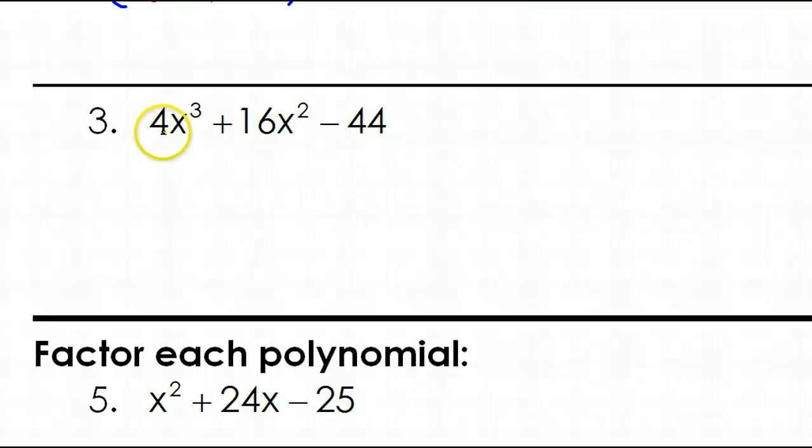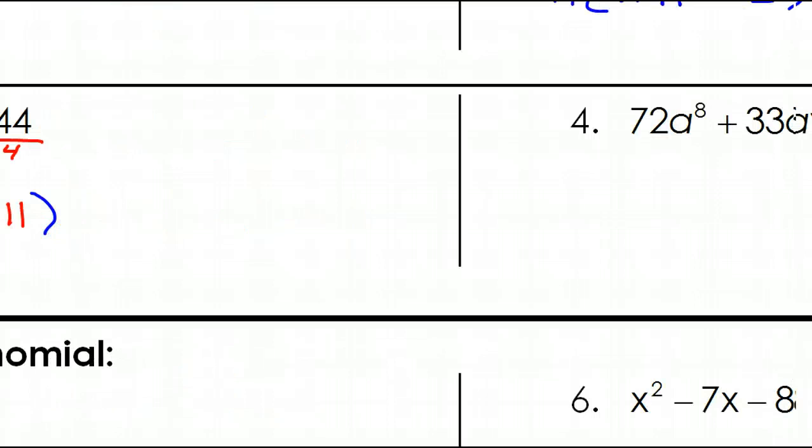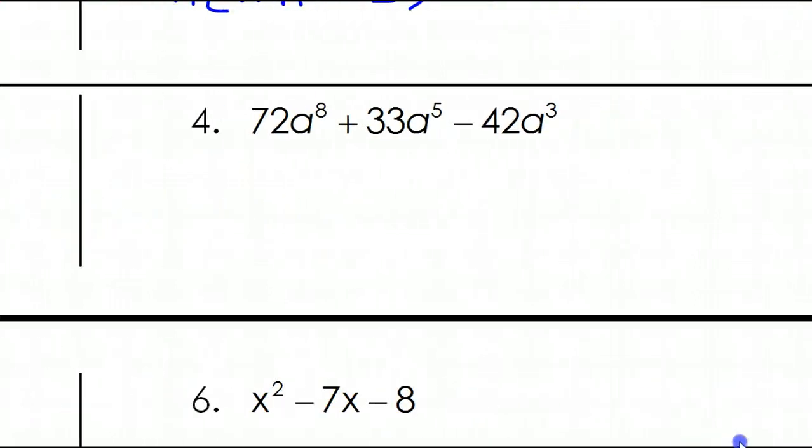All right, number three. I can see that the greatest common factor is 4. 4 divides evenly into all these. Notice that 2 also goes into all these, but you have to pull out the greatest common factor, the biggest number you can. So we will pull out that 4, and go ahead and divide with it. So those 4s cancel out. That leaves me with x to the third power plus 4x squared. And 44 divided by 4 is 11.